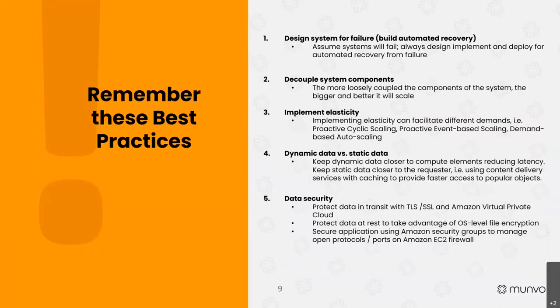Now for best practices — I have ten to share. Best practice number one: design a system for failure. Build an automated recovery system. In a real-time system, every node is a potential point of failure, and adding nodes increases risk. The best practice is to design all components so that not only do they deploy, but every time they fail, they try to recover themselves. This way, across different points in your end-to-end communication chain, you can trust components will recover, making the overall system more resilient.